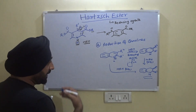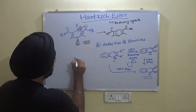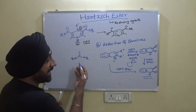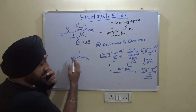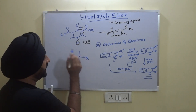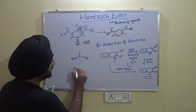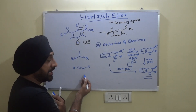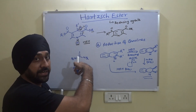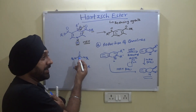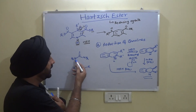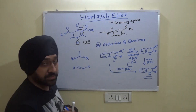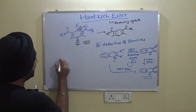Apart from using Brønsted acids and other acids in catalytic amounts, people have also started using organocatalysts with Hantzsch esters — such as thiourea. These thiourea molecules have nitrogen and sulfur and coordinate with the imines via hydrogen bonding. The function is the same as the acid: to activate the nitrogen so that the two hydrogens of the Hantzsch ester add onto the double bond of the imine.